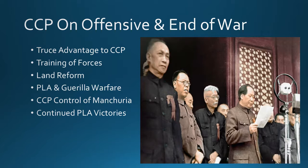Into 1948, the PLA continued achieving victories, disrupting the nationalists' supply lines and then transitioning into conventional warfare. Over the next year, the tide clearly tipped in favor of the communists. Eventually the nationalists were no longer viable. Chiang Kai-shek fled, and on October 1st, 1949, Mao Zedong officially declared the People's Republic of China under communist control — the moment China officially became a communist country.